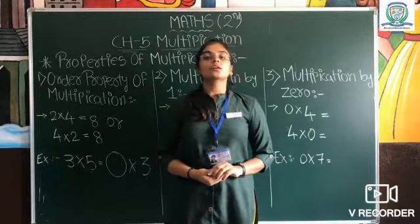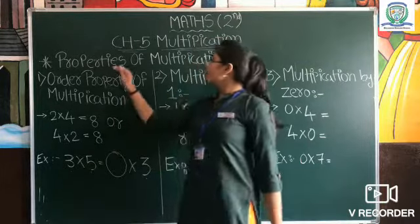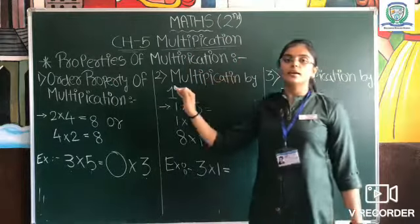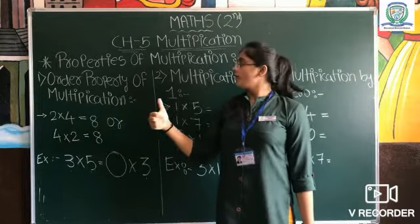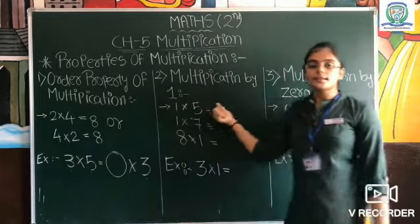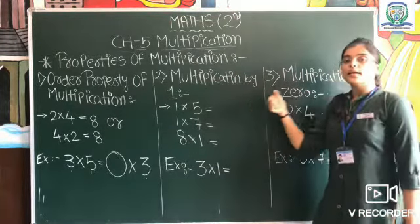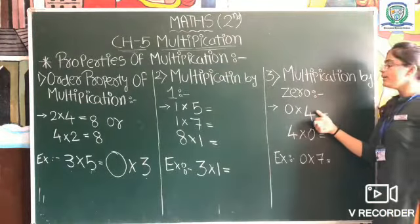Good morning students. Today our topic is properties of multiplication, and there are total three properties: first, order property of multiplication; second, multiplication by one; and third, multiplication by zero.